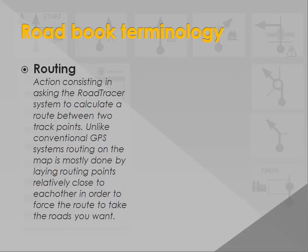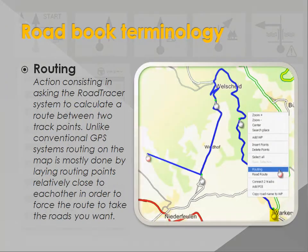The distance to the next waypoint is clearly shown and decreasing in real time. Routing is the action of drawing a route. Road Tracer calculates the route between two track points you dropped on the map. Contrary to conventional GPS routing, the dropped points are close enough to really select the smaller roads you want to explore.